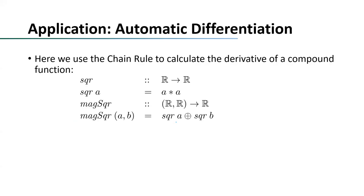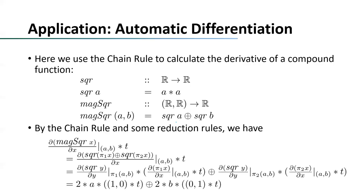Here is an application of the chain rule to automatic differentiation. The example we want to calculate is the derivative of a compound function max-square, which calculates the sum of squares inside a tuple. When the chain rule is applied, we know this function is a compound of the square function and the two projection functions pi1 and pi2. Using an arbitrary term t, we can apply the chain rule and get a result. Since t can be arbitrary, we substitute a tuple of (0,1) and a tuple of (1,0) for t, and we easily get the results of this derivative.